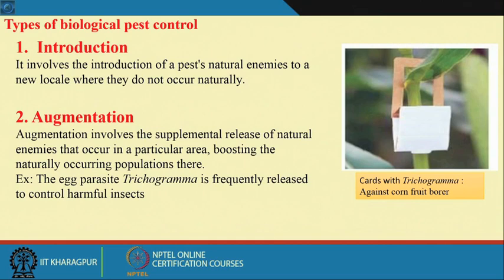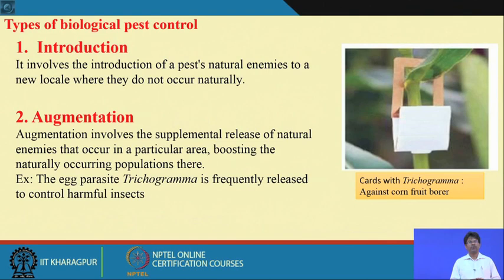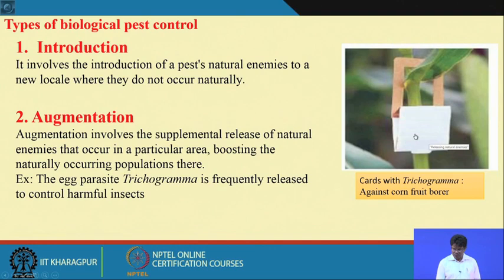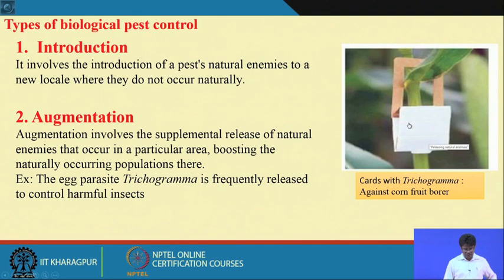The second type is Augmentation, where natural agents are already present but we need to supplement them to increase their populations for effective control. Augmentation involves the supplemental release of natural enemies that occur in a particular area, boosting natural offspring populations. For example, Trichogramma — an egg parasite — is inoculated on cards and released against the corn fruit borer. This beneficial fungus Trichogramma is used to control many insect pests and diseases.